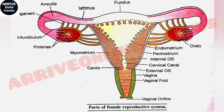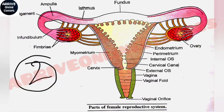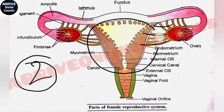The ovaries are attached to ligaments. This is the uterus, and this tube is called the fallopian tube.